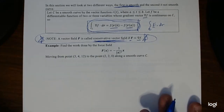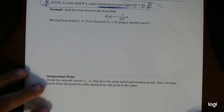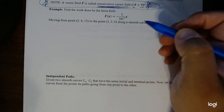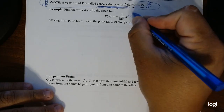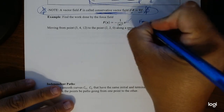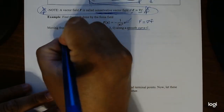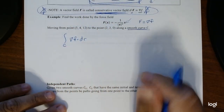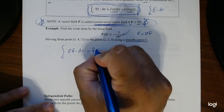This makes line integrals much easier. We can just substitute using the conservative vector field definition, and that will be our new definition of a line integral, which makes this integration much simpler. We don't have to figure out all those parameterization manipulations. Now we need to find the work done by the force field, moving from (3,4,12) to (2,2,0) along a smooth curve C. I'm going to tell you right now that this is a conservative vector field, so you can see how the example works. Because it's conservative, we know this equals the gradient of F.